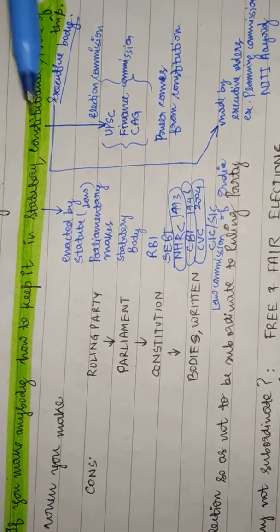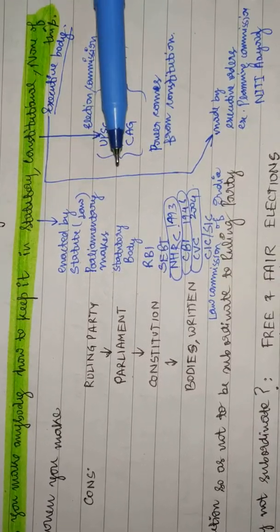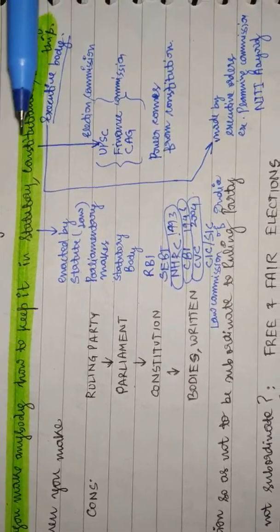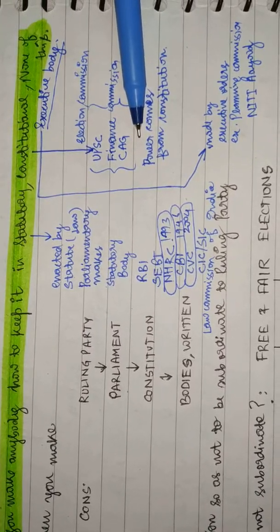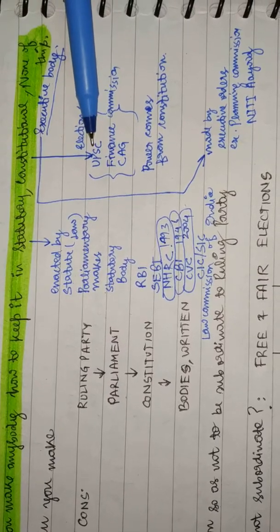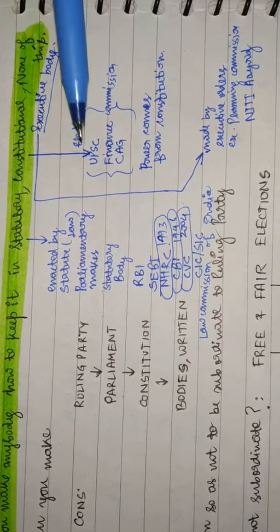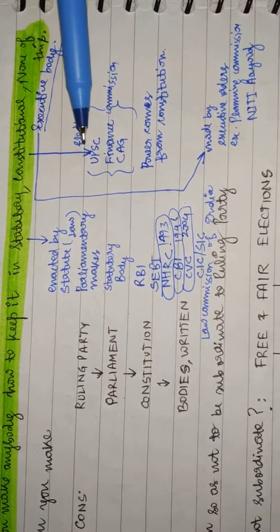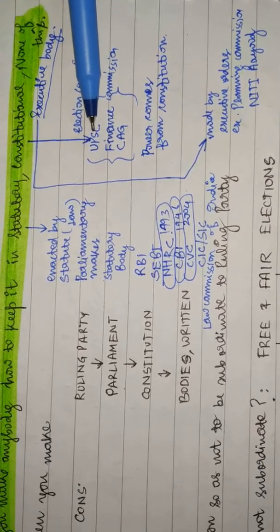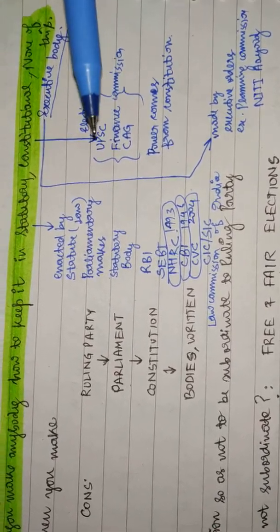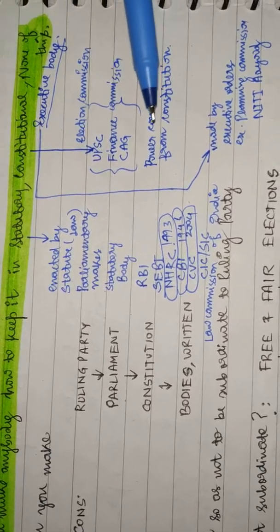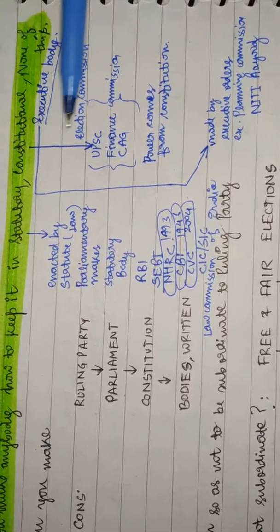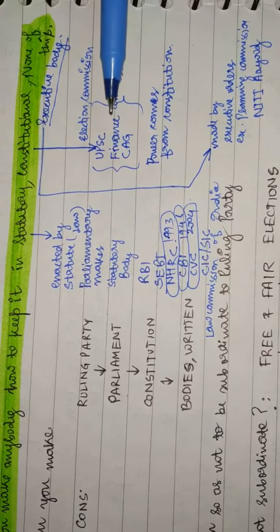Constitutional body, as the term suggests, is a body which derives its power from the constitution. UPSC has articles mentioned - Article 323 in the name of UPSC. Election Commission has an article, Finance Commission has articles, CAG has articles. So when a body comes from constitution, it's a constitutional body.